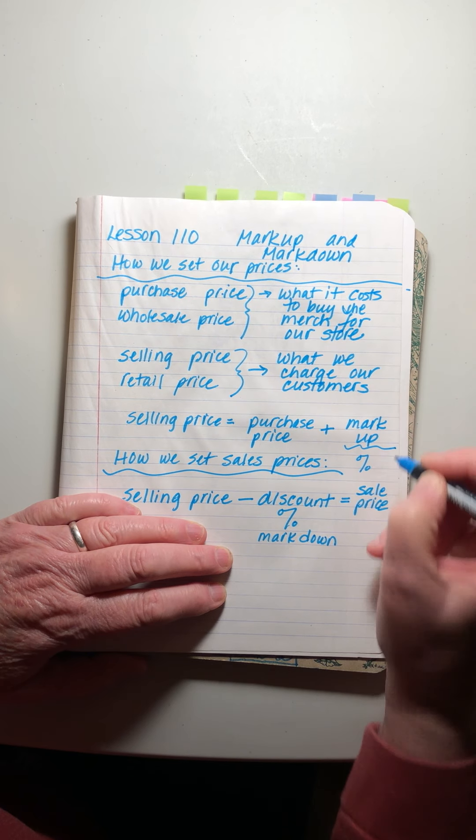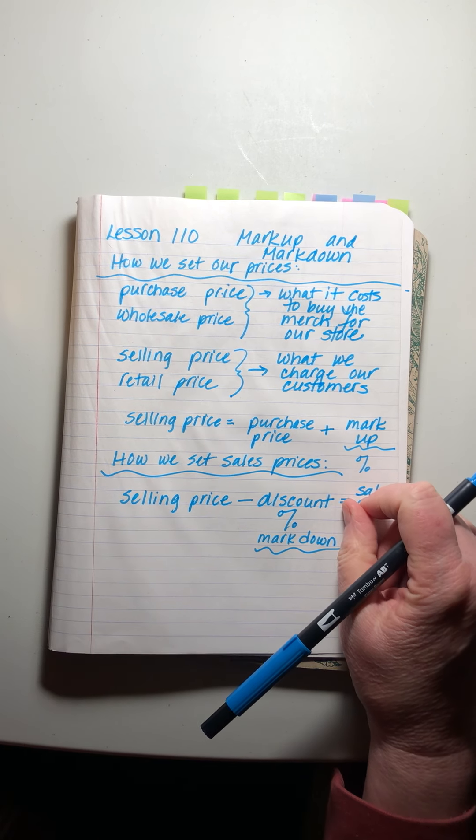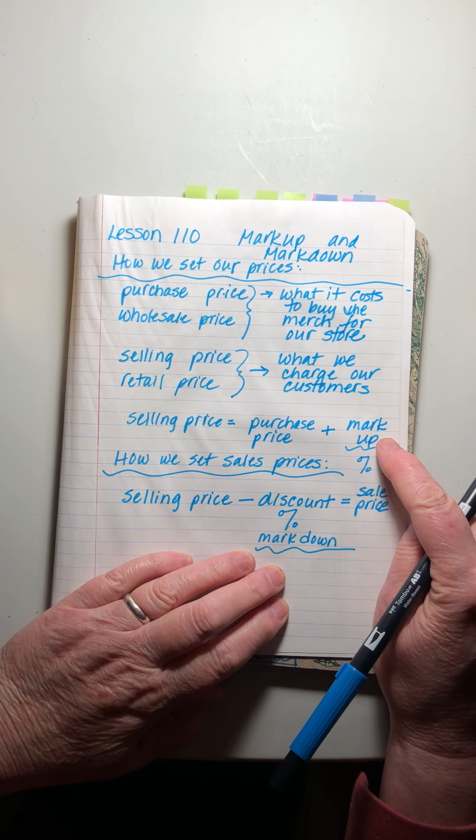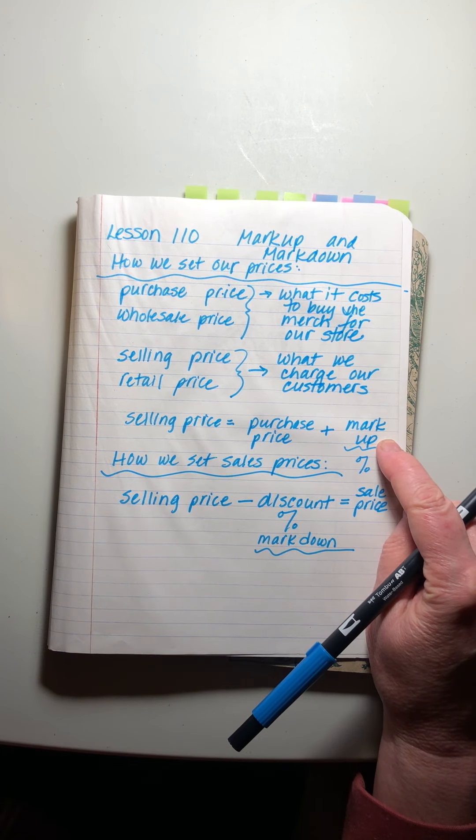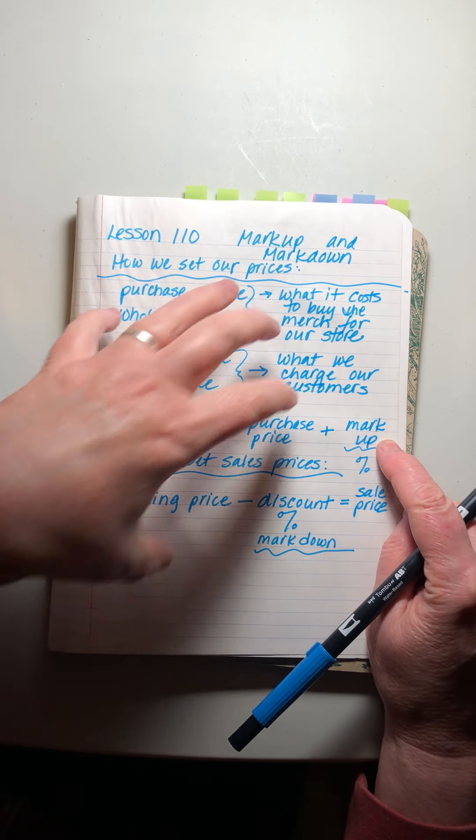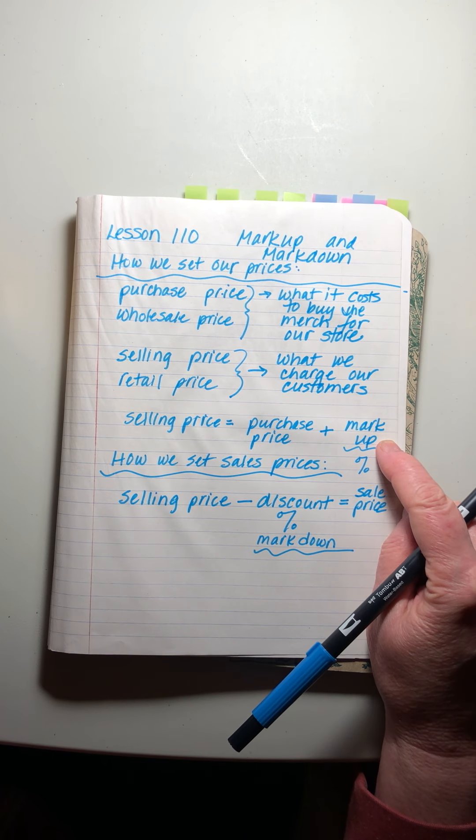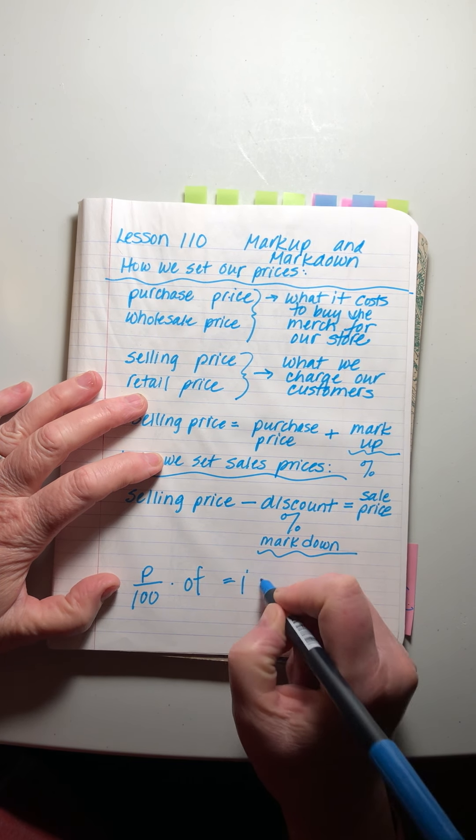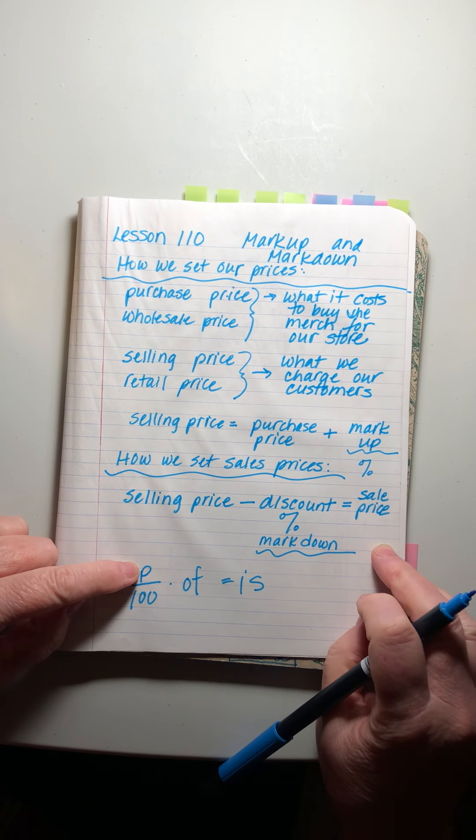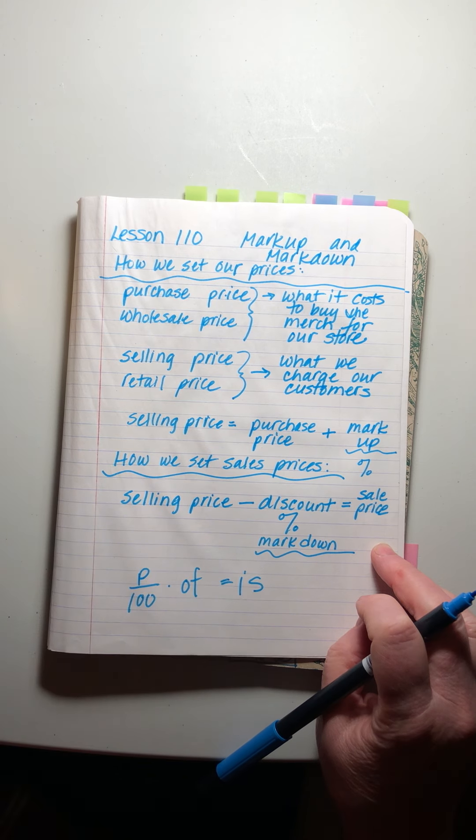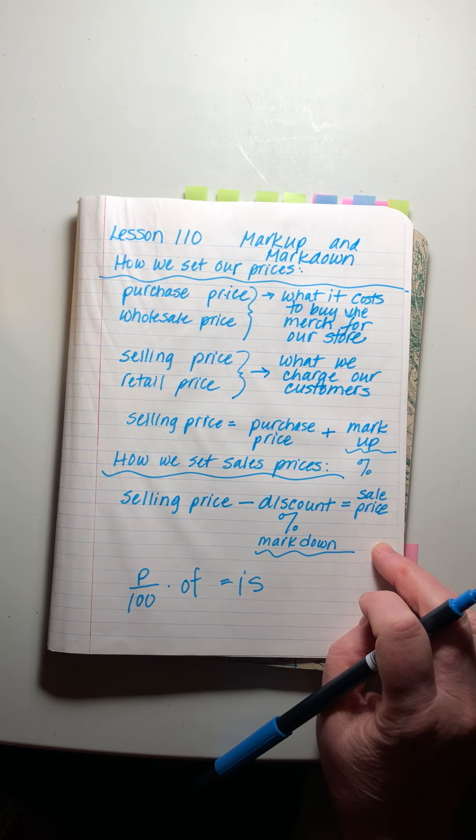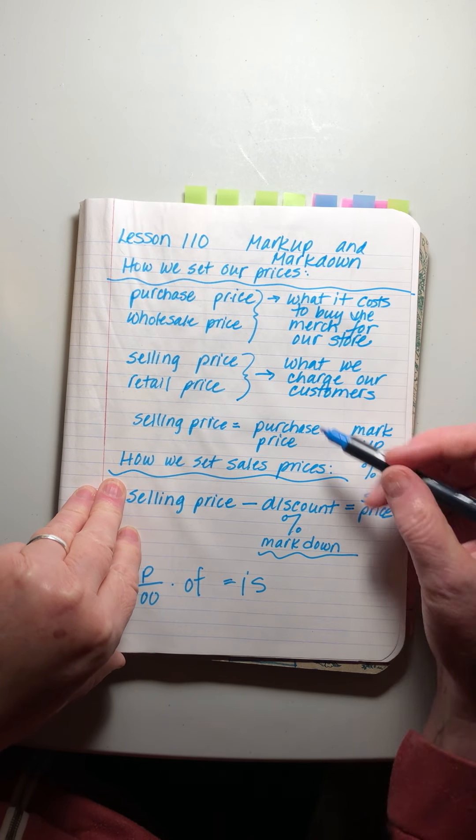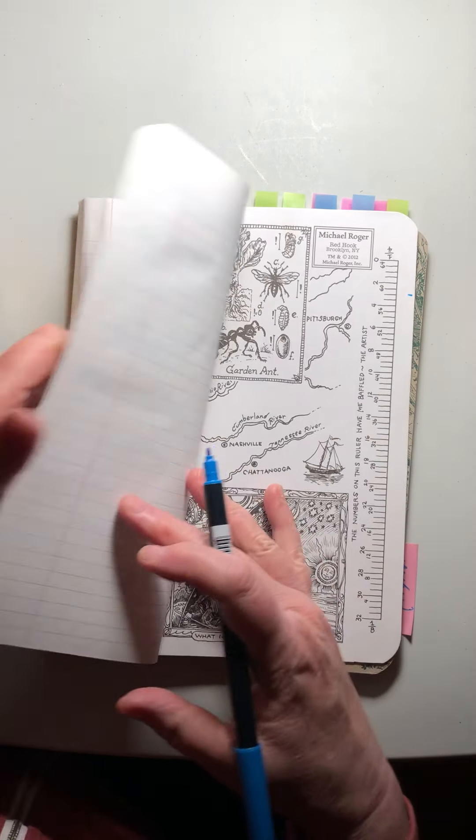So there we have the markup and the markdown that we're talking about. What's confusing about these problems is that we have a lot of terms that we're not used to, and we have percents for a markup and percents for a markdown. What we have to do is take a minute to understand these two processes, and then we have to recognize that sometimes our percents are going to be greater and sometimes they're going to be less. The only thing that's hard about these - the math is easy - is we just have to keep our wits about us.